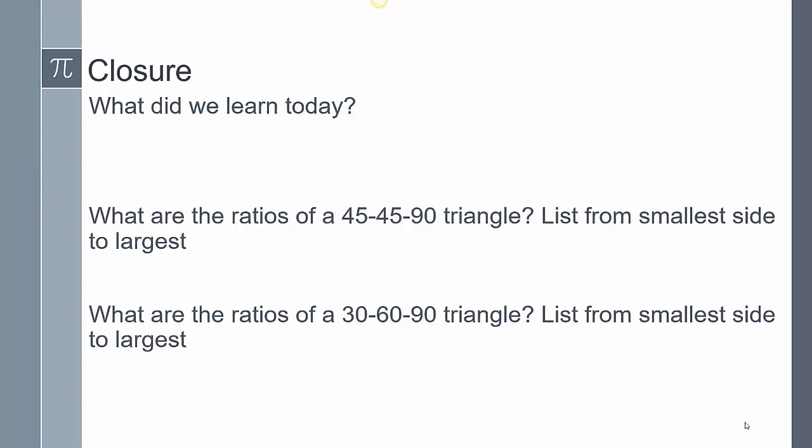To close today's lesson, what did we learn today? We talked about the special triangles and the ratios of a 45, 45, 90, and a 30, 60, 90 triangle. We also reviewed just a little bit of the Pythagorean theorem. Now I want to hear from you. What are the ratios of a 45, 45, 90 triangle? List from the smallest side to the largest. And the same for the 30, 60, 90 triangle. This does conclude our lesson. If you have any other questions, please leave them in the comments.